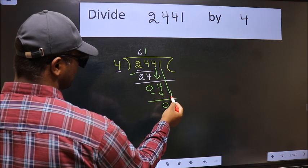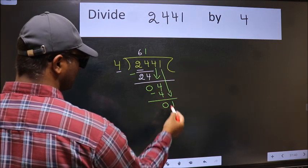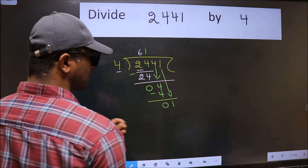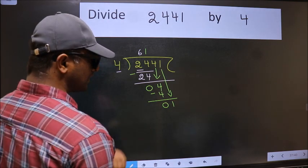After this, bring down the next number, so 1 down. After this step, the mistake happens.